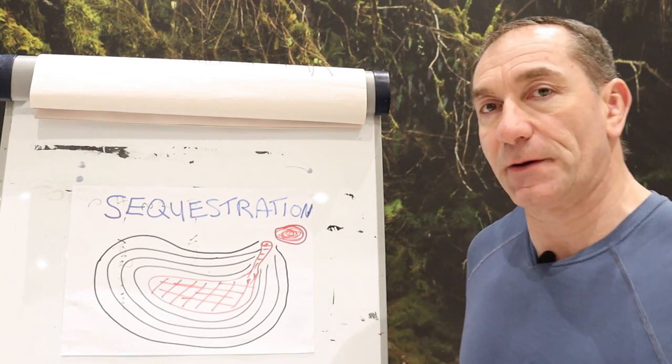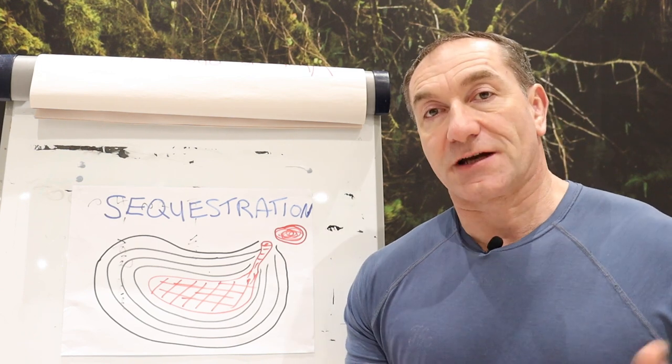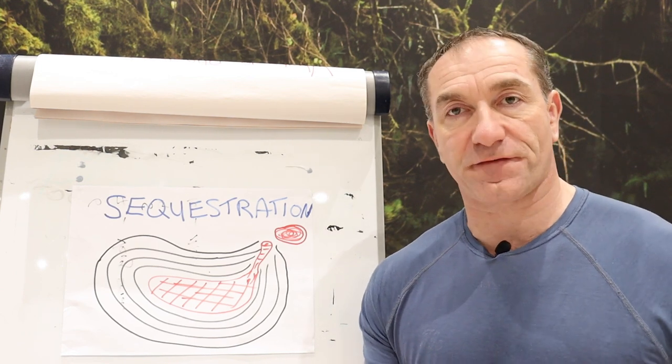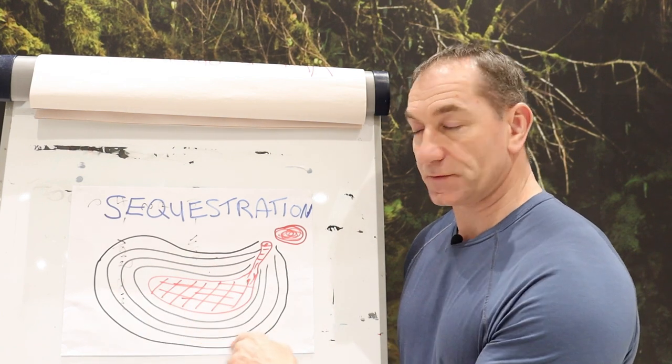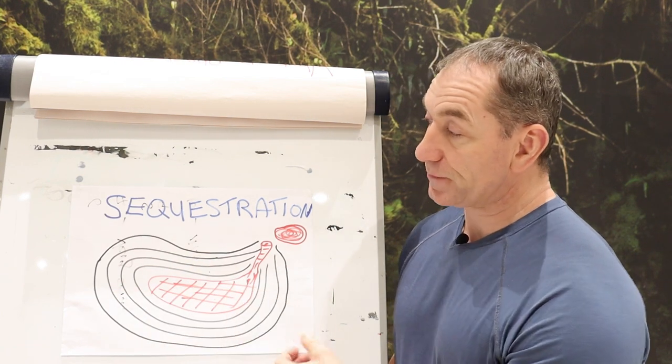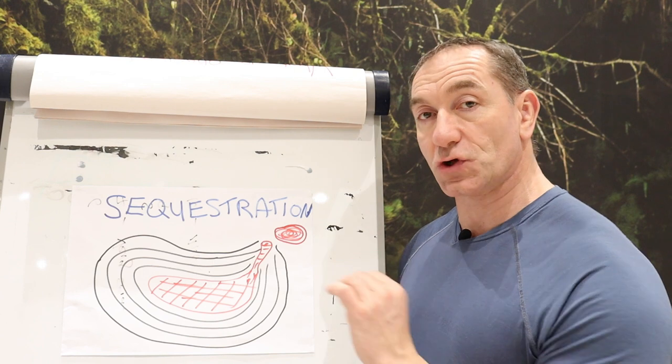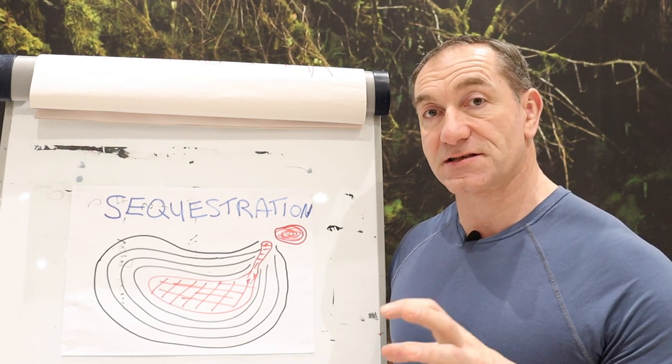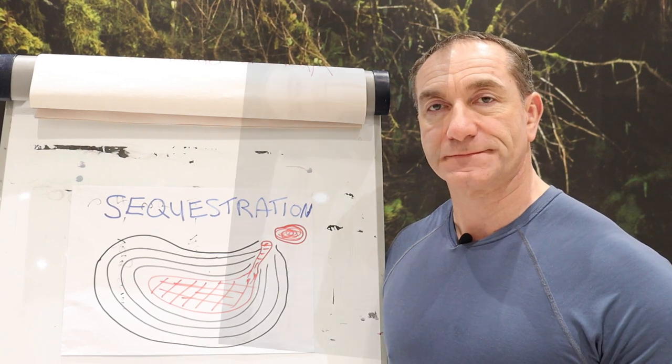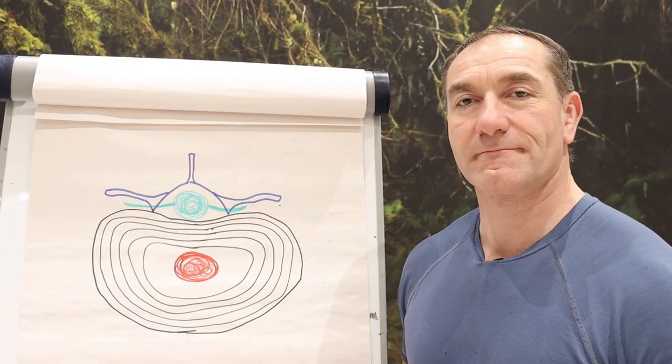Now, something else that you may hear people say to you is, oh, you've got a tear in the annulus fibers. Now, these were the annulus fibers we talked about earlier. So, I'm going to bring us back to our original picture to have a proper look at what the annulus tears mean as well.